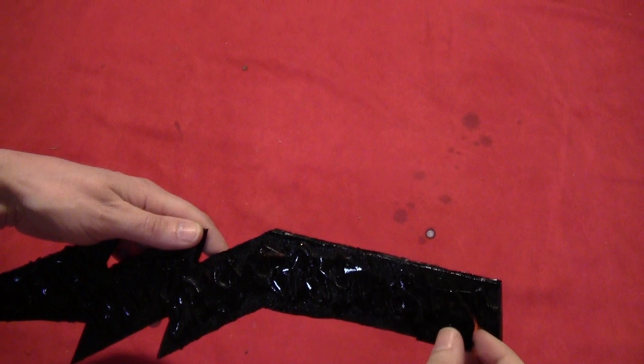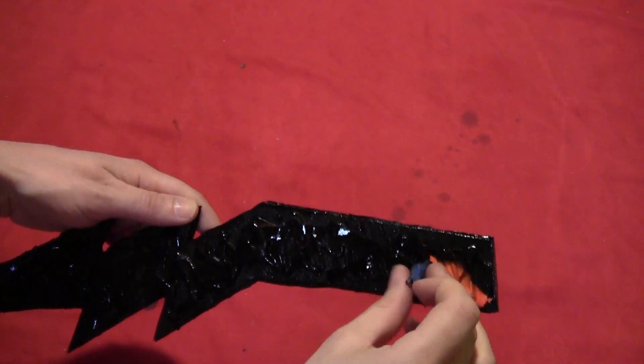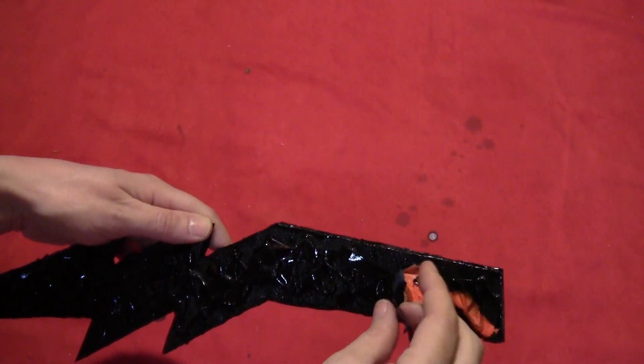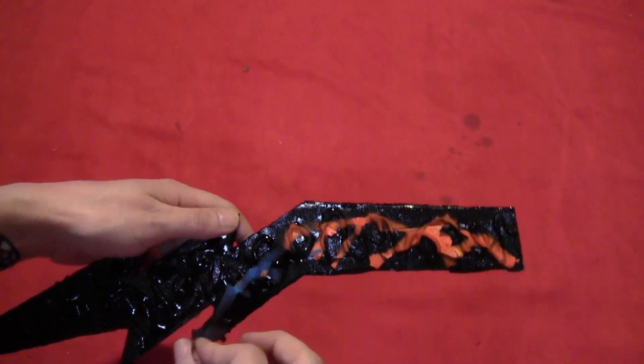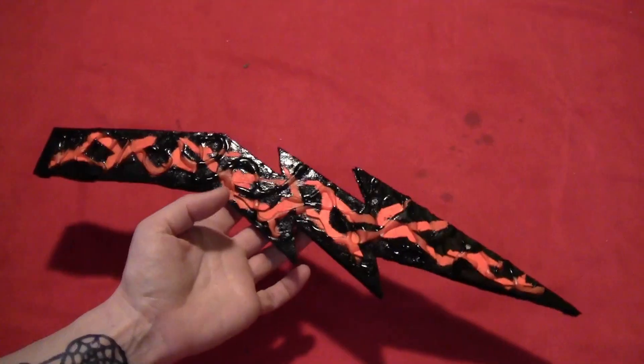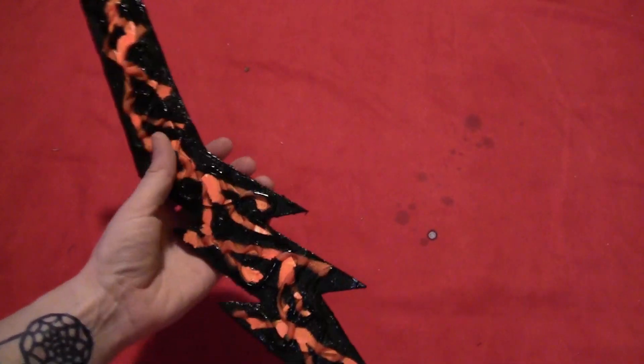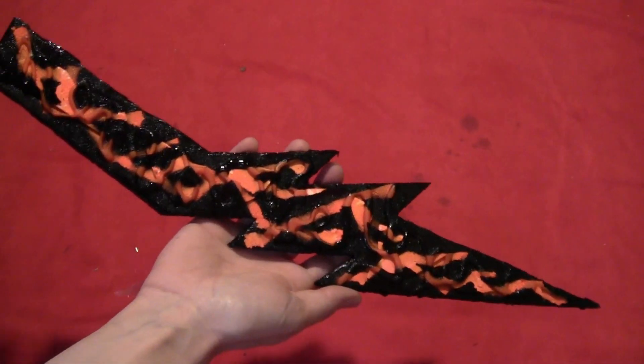And then I painted the whole thing black and peeled off the tape. And this is the fun part, watching the orange glowing lines come to life. The black that I used is glossy, so it shows up nicely against the bright orange lightning lines.